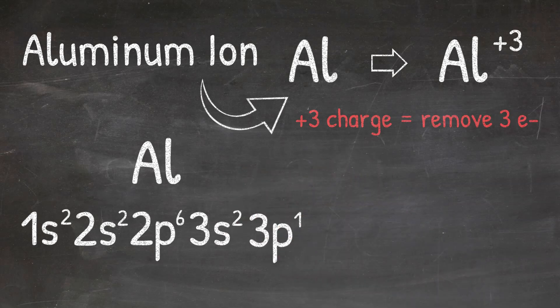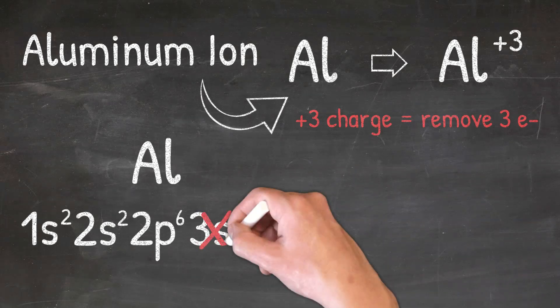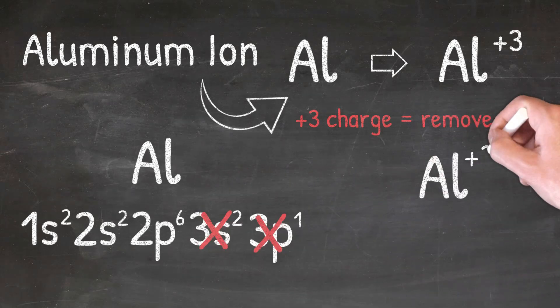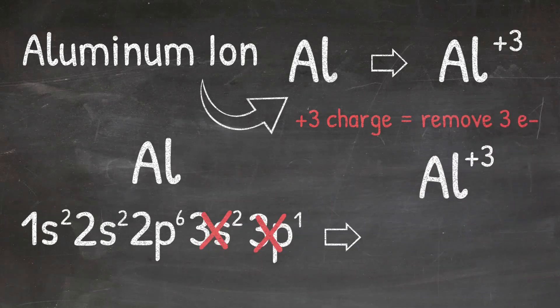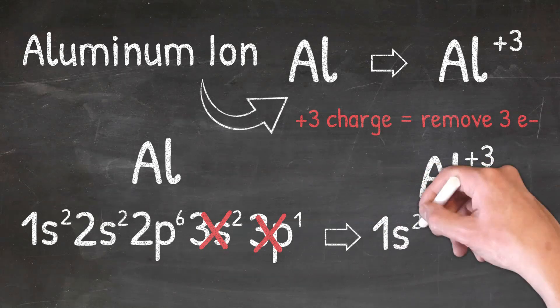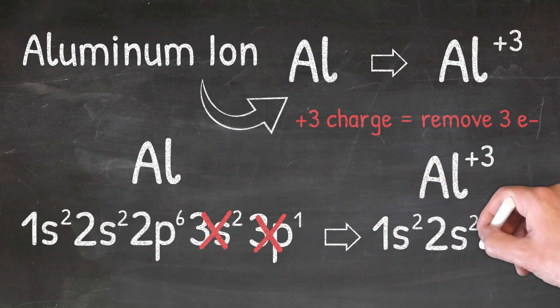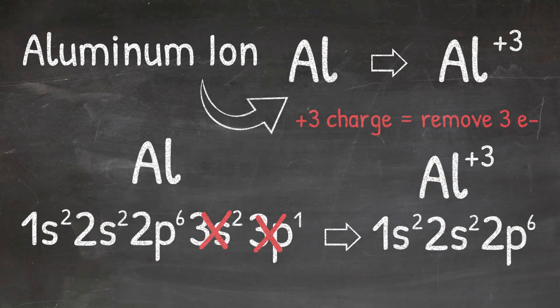And again we're going to remove three electrons from the outermost energy level. In this case that would be the third energy level. So I'm going to remove one from the 3p and two from the 3s. This leaves me with an electron configuration of 1s2, 2s2, 2p6 for the aluminum ion.